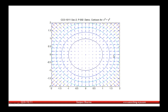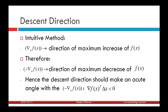If instead of moving in the descent direction we go in a direction that increases the function rapidly, the value will increase. Therefore, to decrease the function value, we need to move in the direction of the negative gradient, or in any direction that makes an acute angle with the negative gradient — equivalently, an obtuse angle with the gradient. This means ∇f(x)ᵀ Δx should be less than zero.